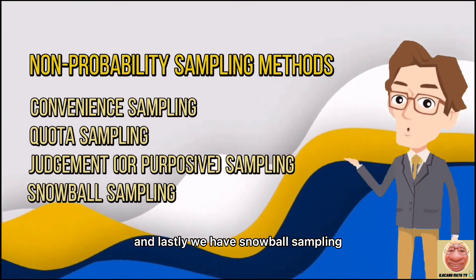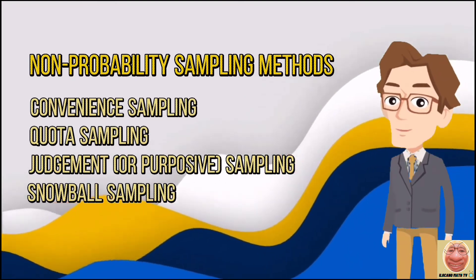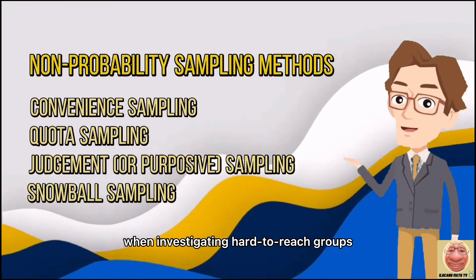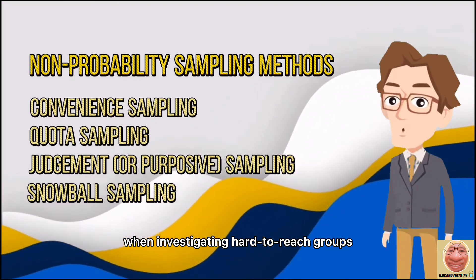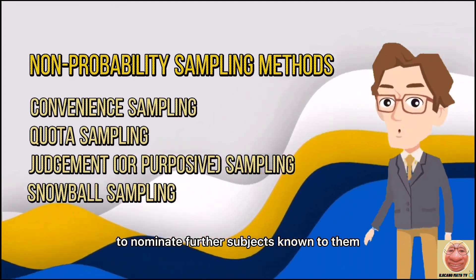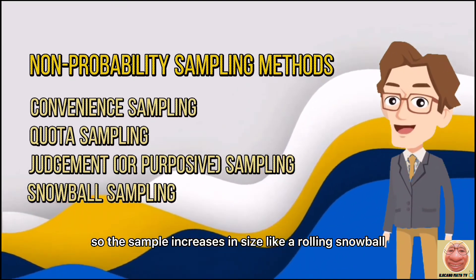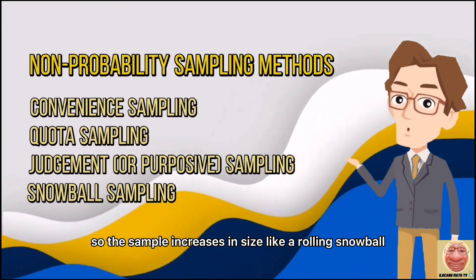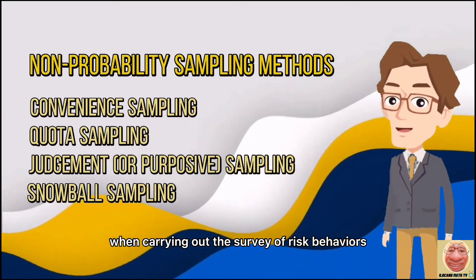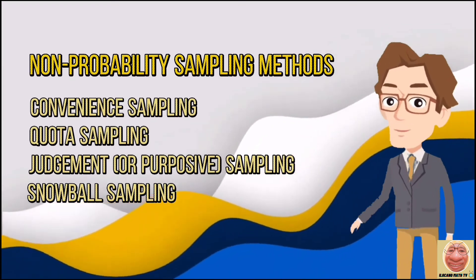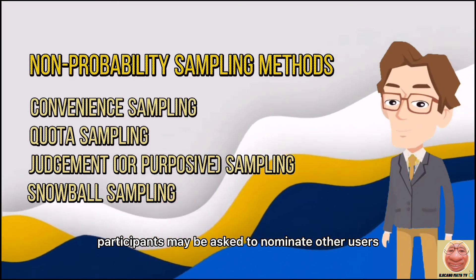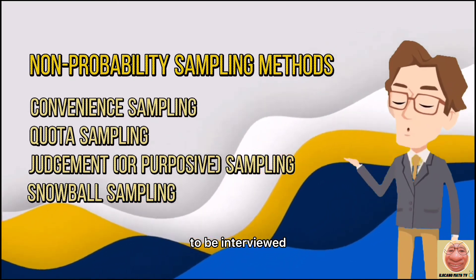Lastly, we have snowball sampling, commonly used in social sciences when investigating hard-to-reach groups. Existing subjects are asked to nominate further subjects known to them, so the sample increases in size like a rolling snowball. For example, when carrying out a survey of risk behaviors among intravenous drug users, participants may be asked to nominate other users to be interviewed.